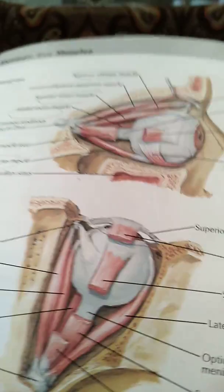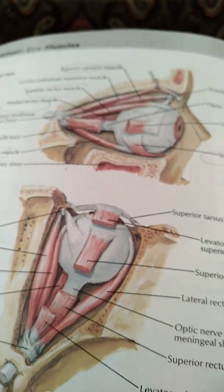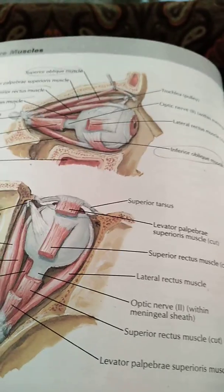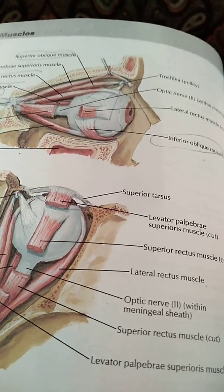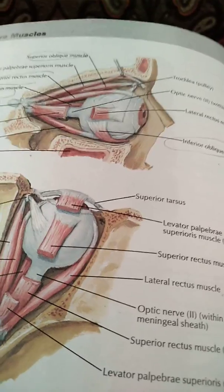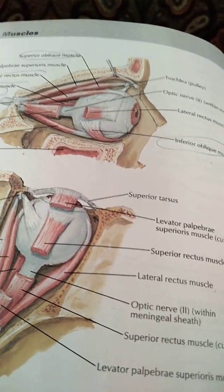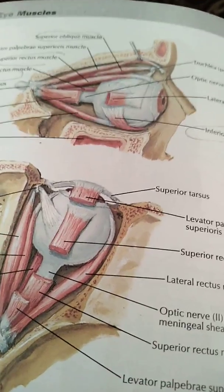That was all for the muscles of the eyelid and eyeball. Hope the orbit region will be easy after watching the videos. If you have any questions, do leave them in the comment box, and for more videos, like and subscribe to the channel.